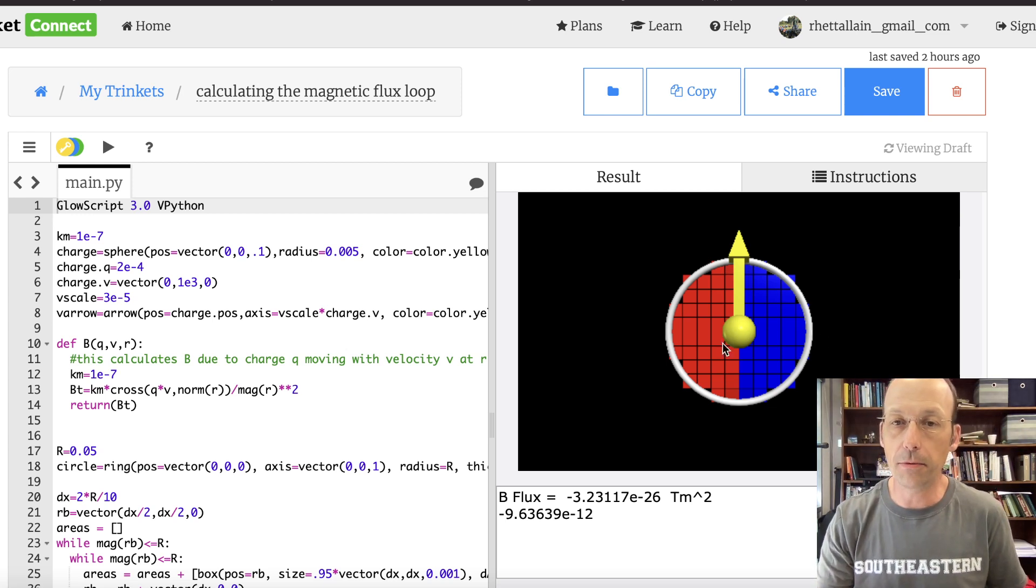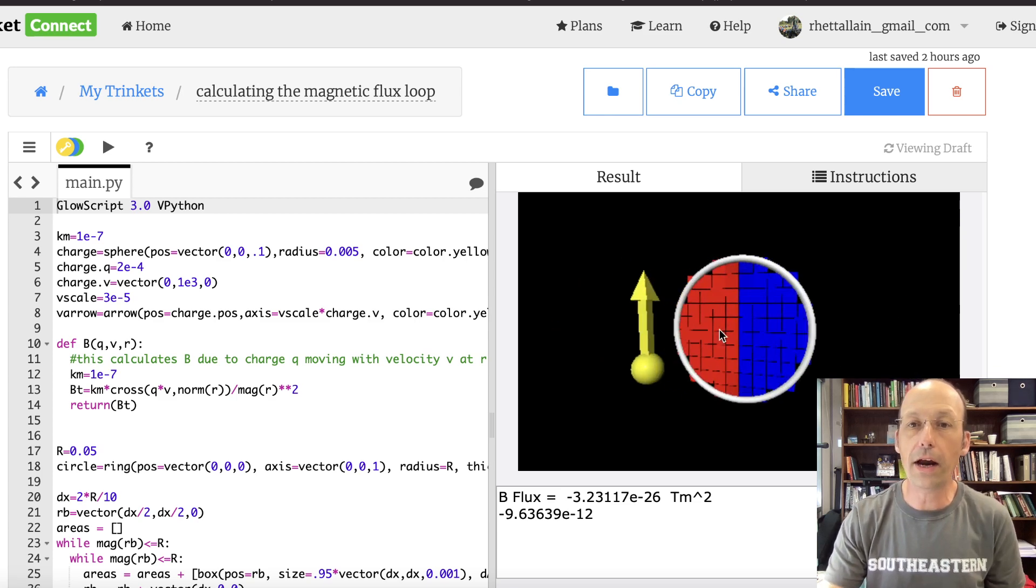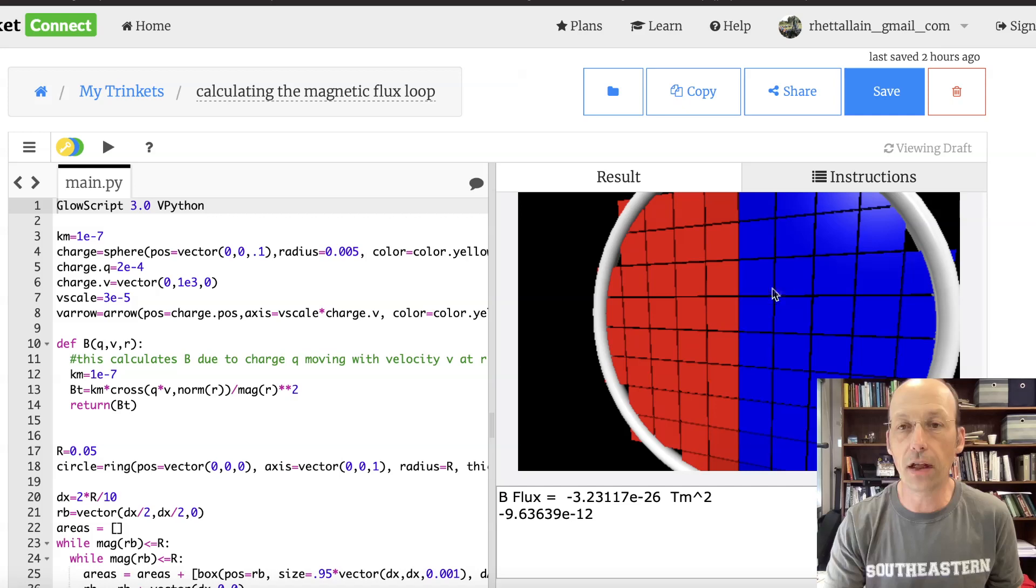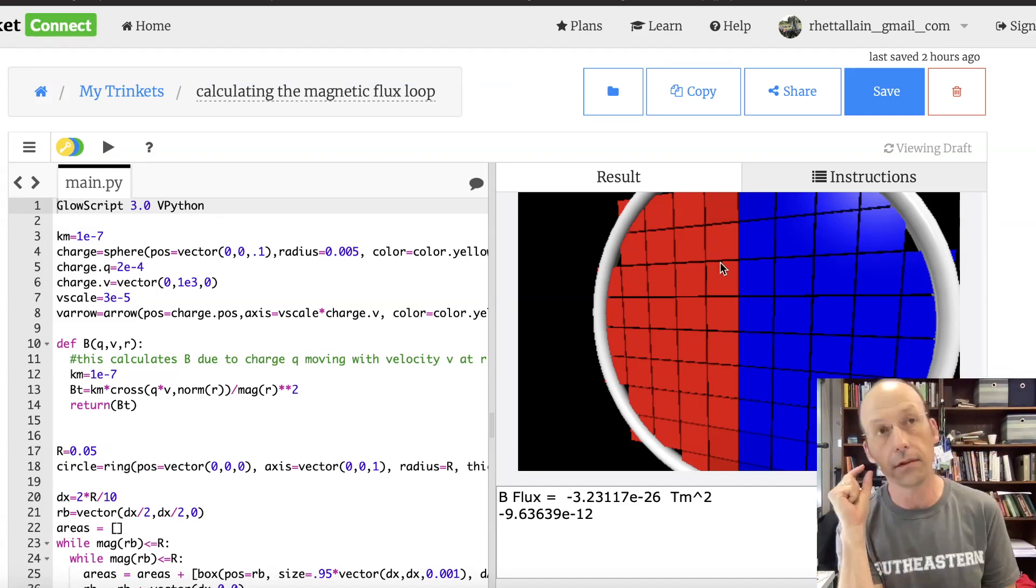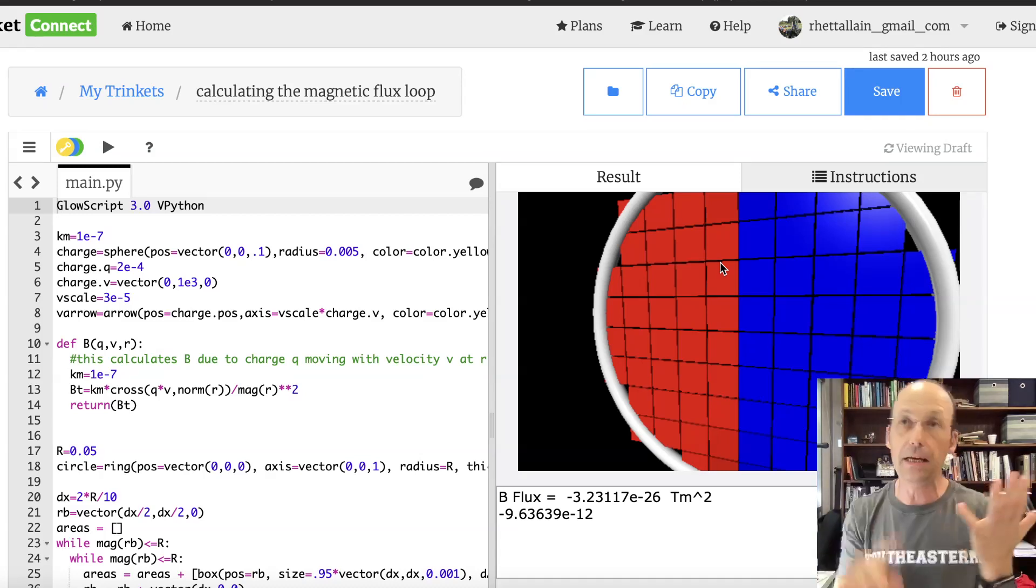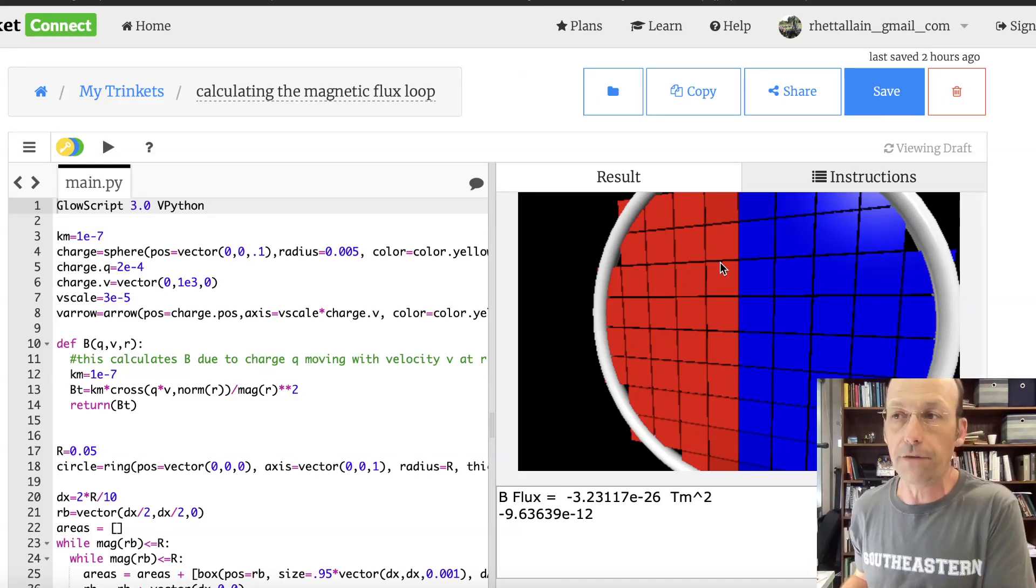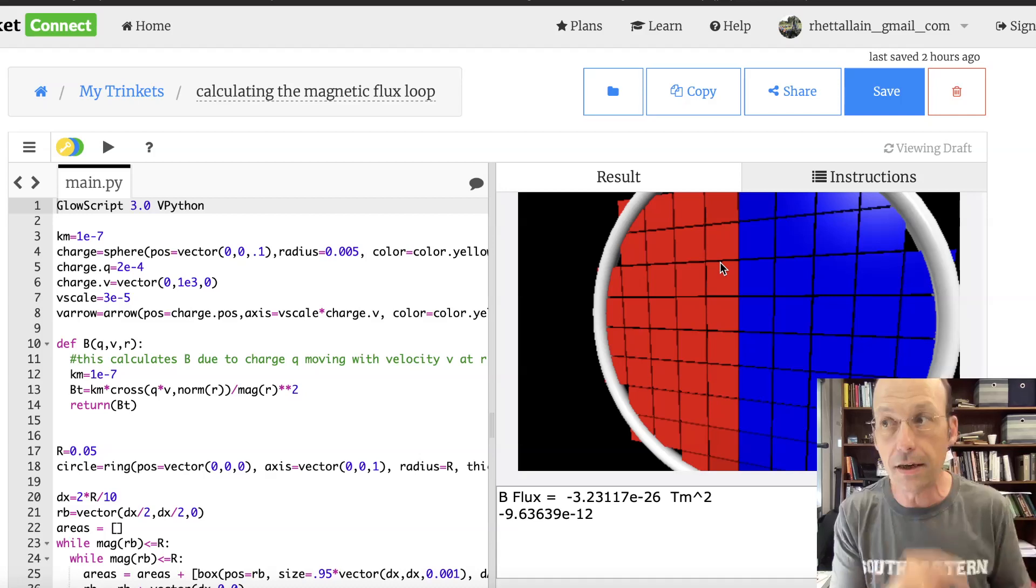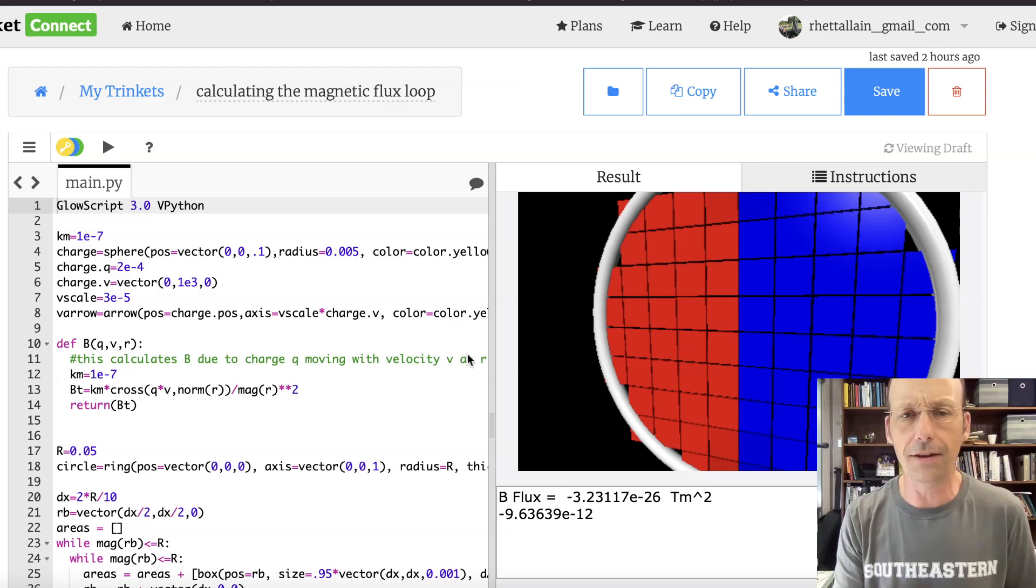Here is what I did before. This is the numerical calculation of the magnetic flux due to a moving charge through a loop. Here's my moving charge and this is actually on top of my mouse on top of a loop right there.